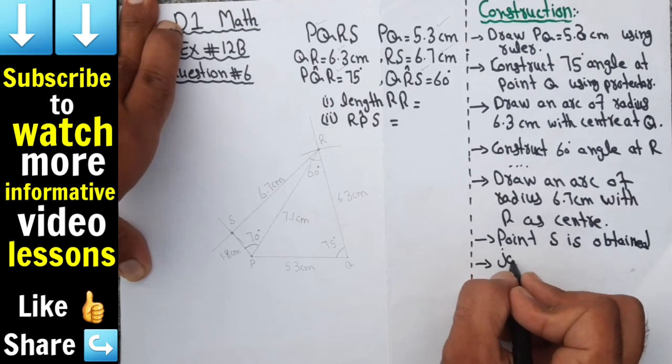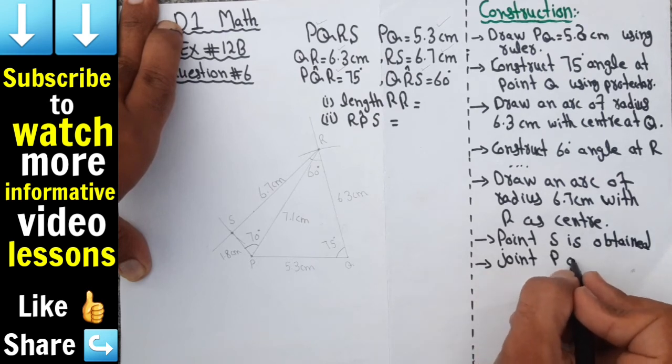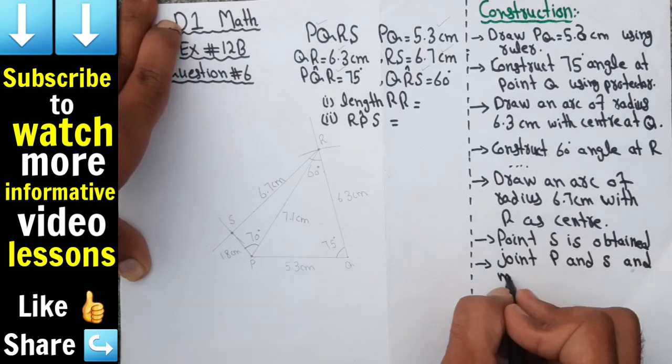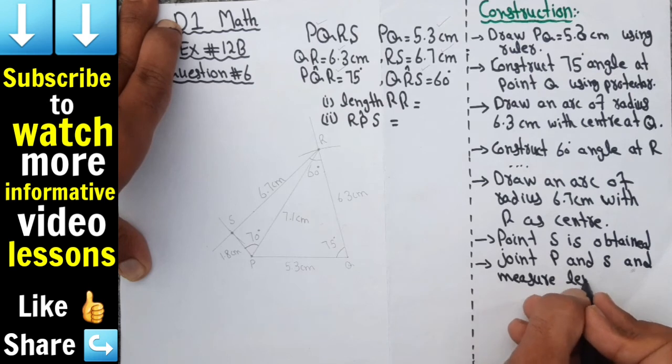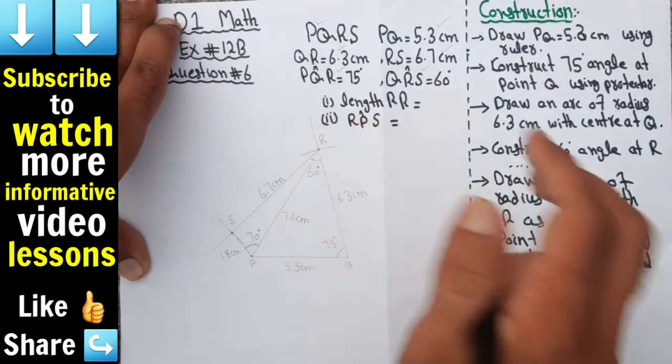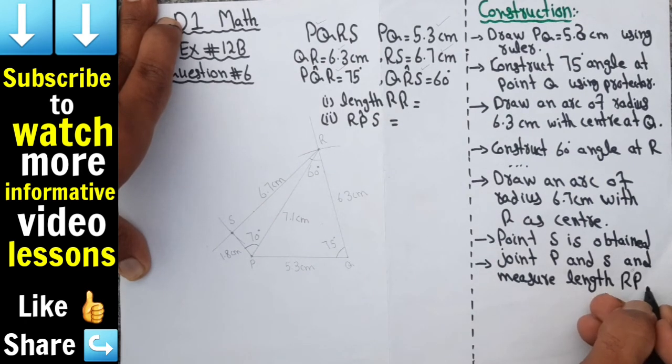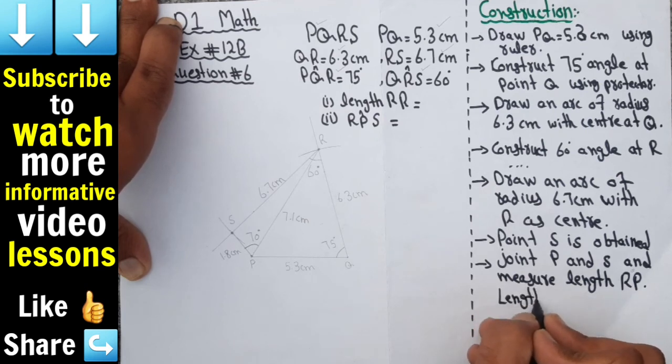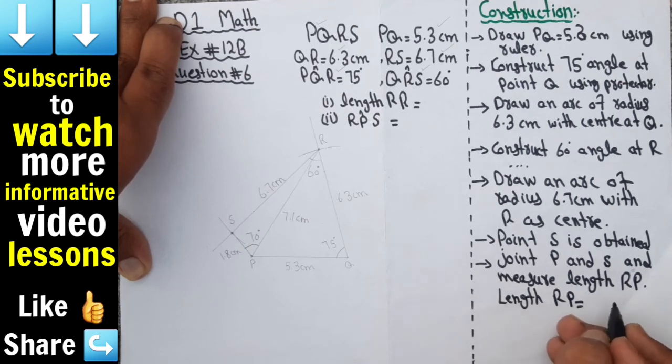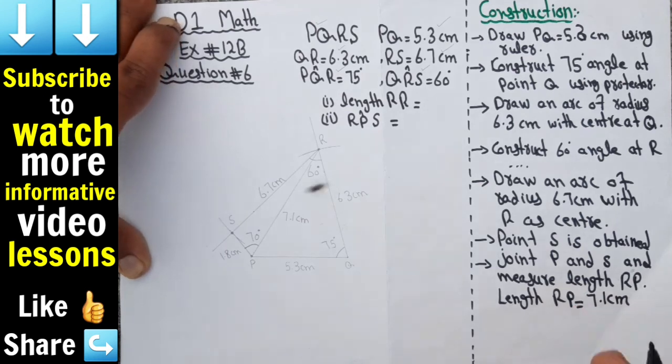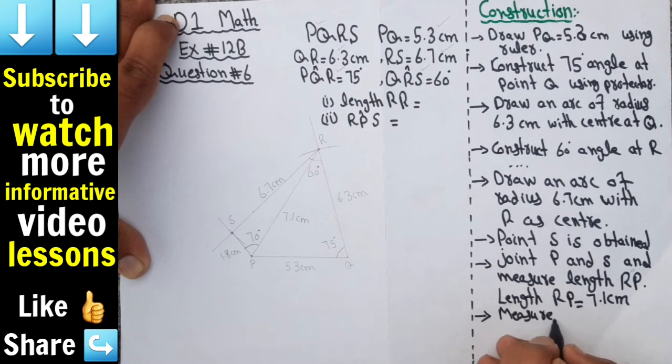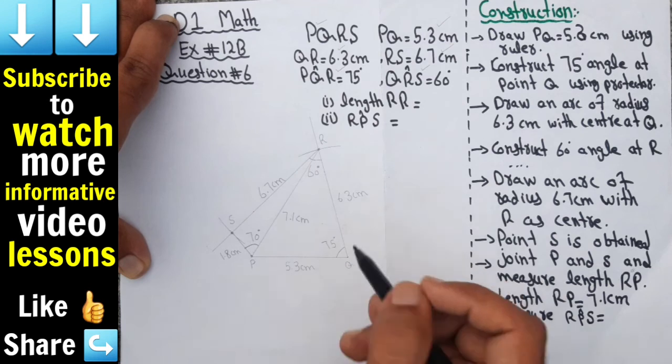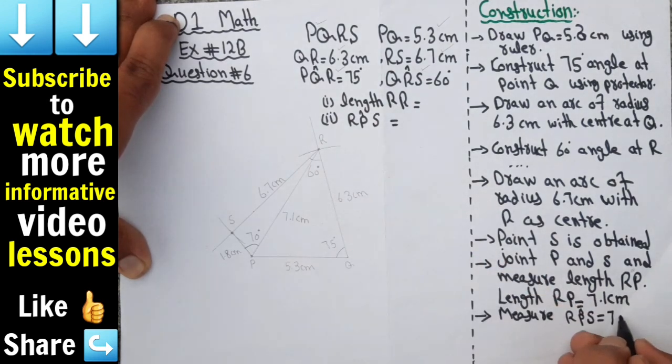Now join P and S and measure length RP. PR equals 7.1 centimeter. We have to measure angle RPS, which is equal to 70 degrees.